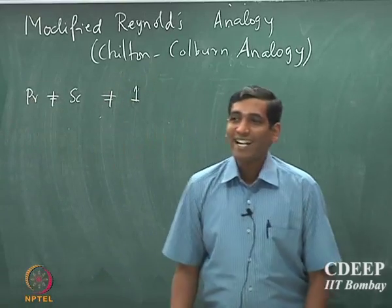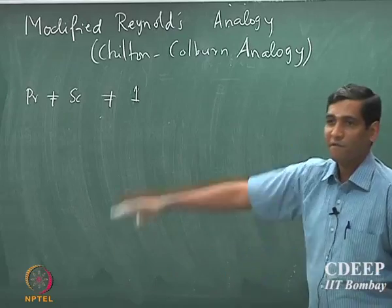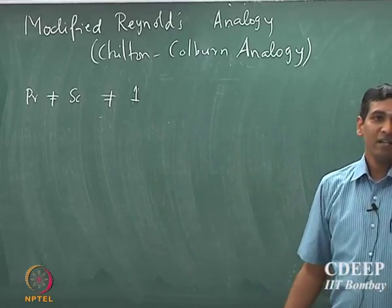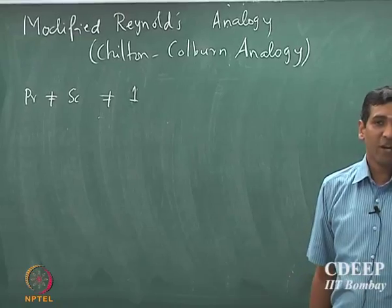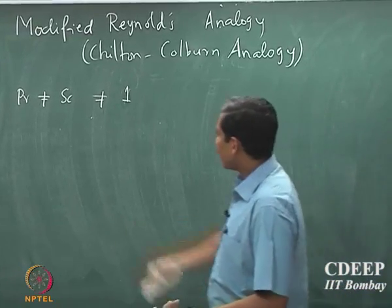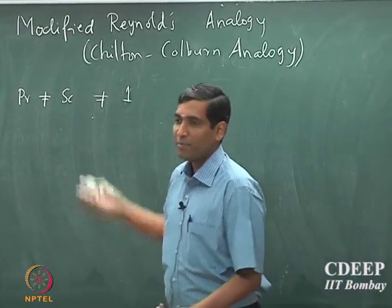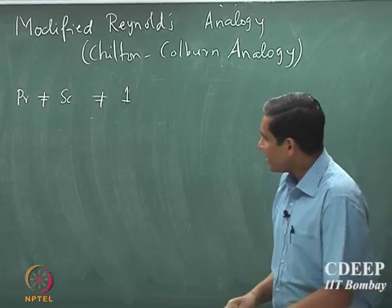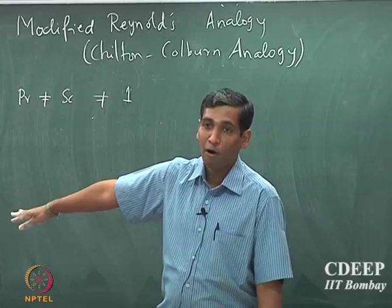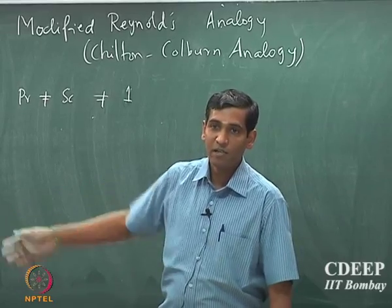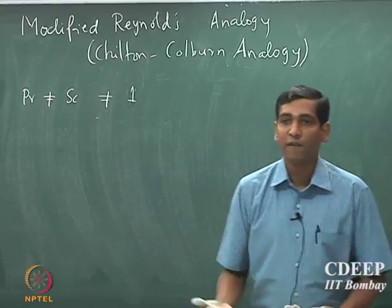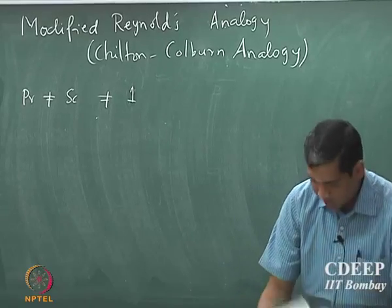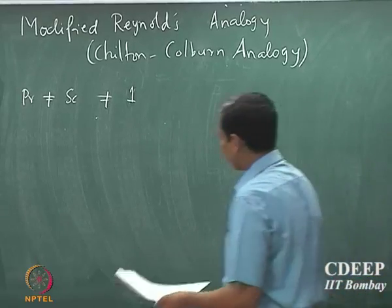In the Chilton-Colburn analogy, Prandtl number is not equal to Schmidt number, and obviously neither is equal to 1. There is no purely analytical way of finding the equivalence between the three transport mechanisms in the boundary layer in this case. But by observing the functional form, one can define what are called the Colburn factors.